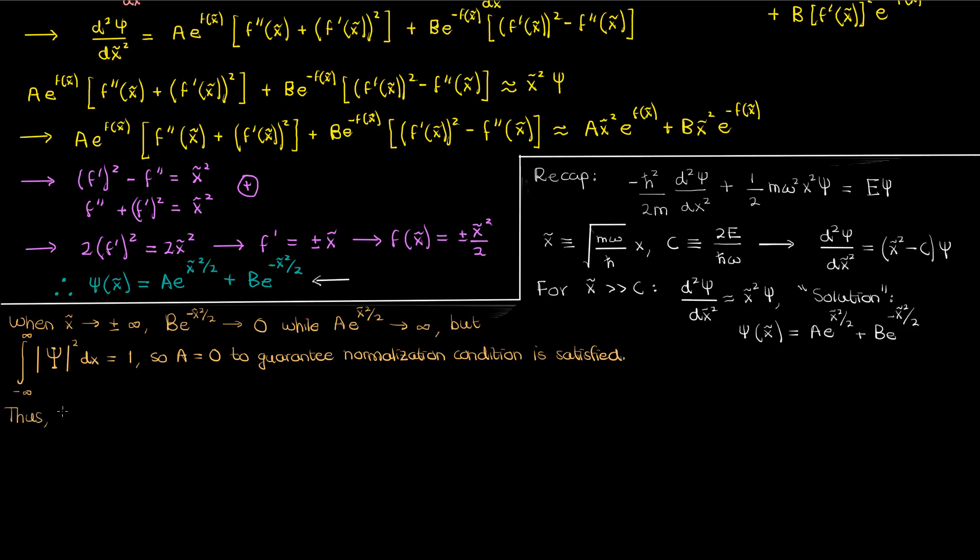Now the solution to the approximate differential equation we're left with just has the negative exponential, but how do we get from here to the solution of the full non-approximated differential equation? This is where we'll use another trick. We'll suppose that the solution to the full differential equation is given by some function small h of x tilde times the exponential of negative x squared over 2.